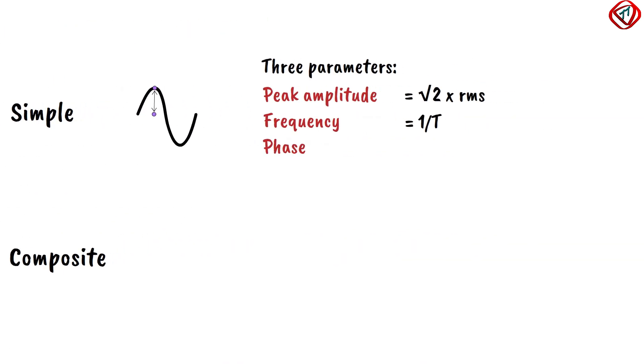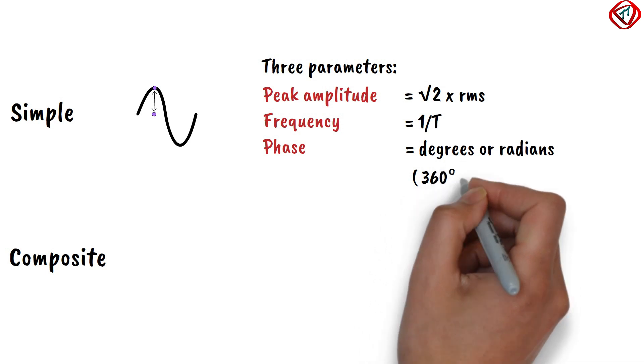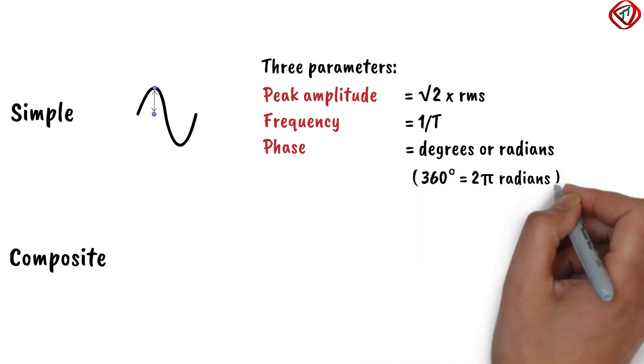Phase describes the position of a wave relative to time zero. It is measured in degrees or radians. 360 degrees is equal to 2 pi radians.